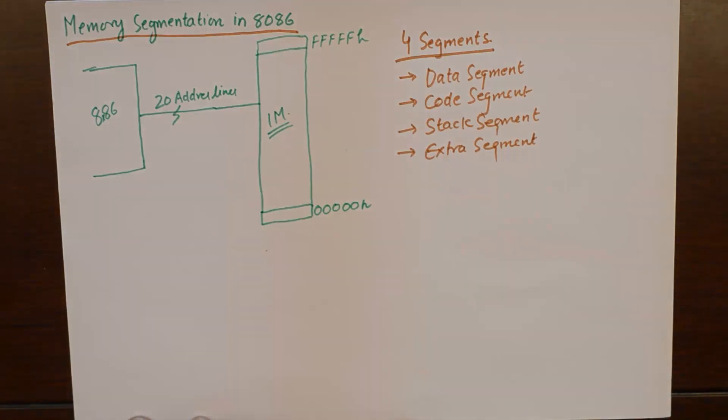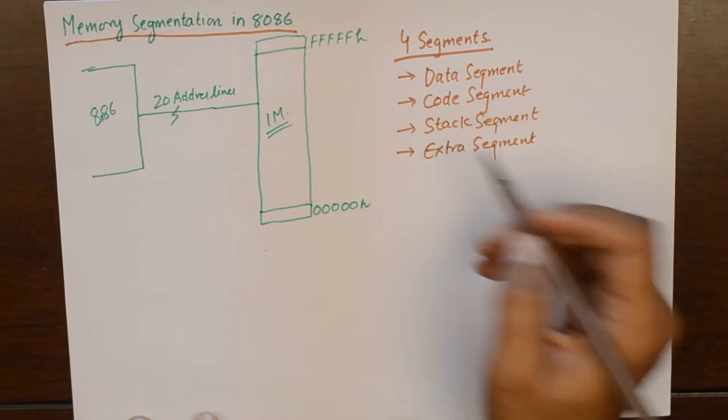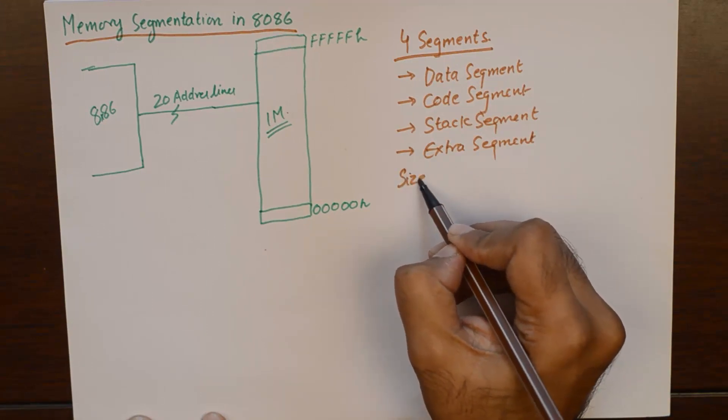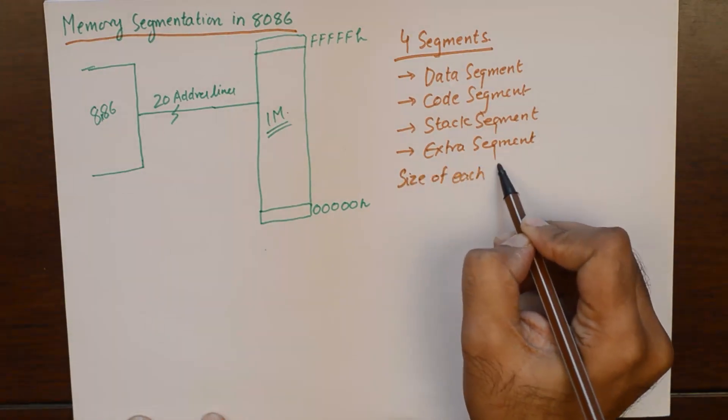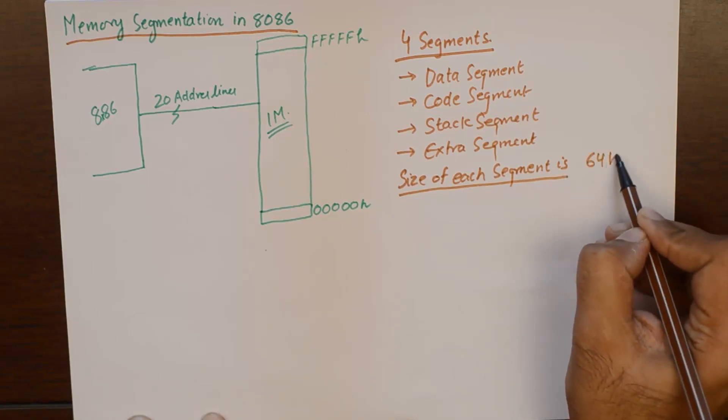Data segment is going to take care of all the data related operations. Code segment will hold the programs, stack segment will perform the stack related operations, and extra segment is another 4th kind of segment to perform string related operations. At any point in time all these 4 segments are active in the memory. The next point which is very important is that the size of each segment is 64K.